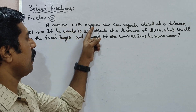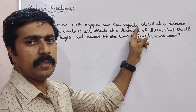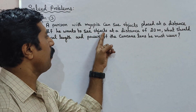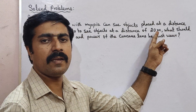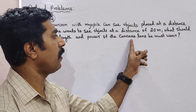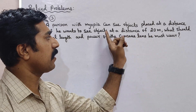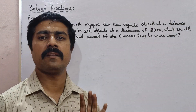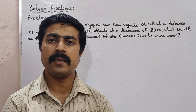A person who has a myopia problem can see objects placed at a distance of 4 meters, but cannot clearly see objects at 20 meters. This defect can be corrected using a concave lens as a correction lens. If you use this lens, objects at 20 meters distance can be seen clearly.